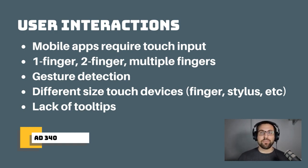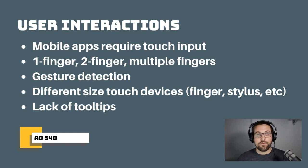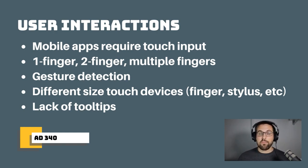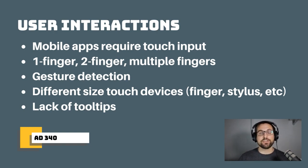We have to recognize touch gestures consistently and respond to them. Different touch inputs exist too — my finger touching the screen might be a different size than yours, or different from a stylus. We have to recognize all those different things. Another interesting challenge: mobile apps generally don't have tool tips or a mouse to hover and highlight things, so we have to build really intuitive UIs that guide users into common interactions and functionality.